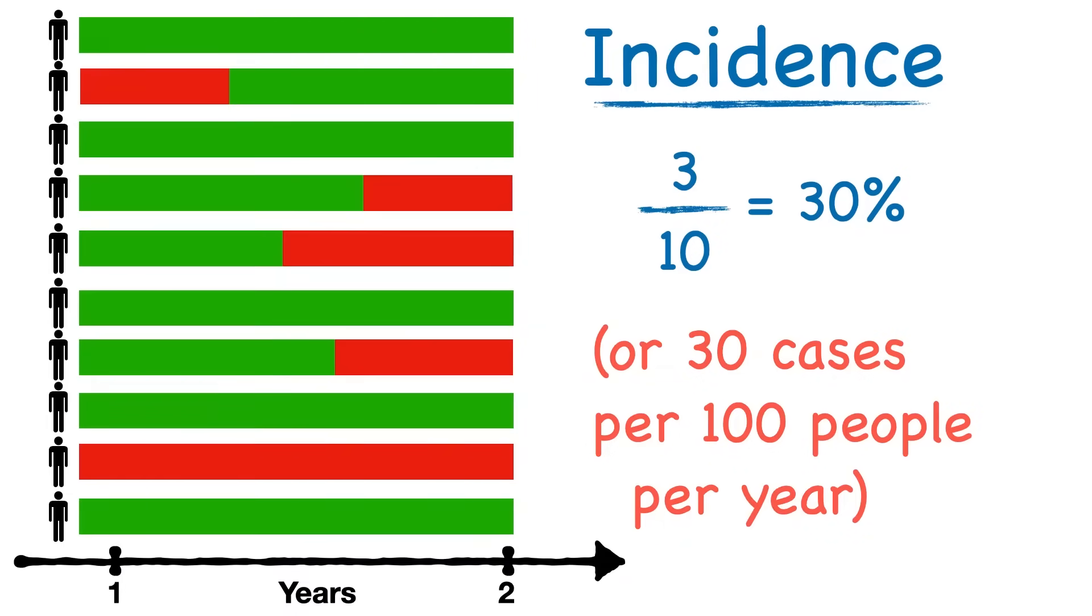In other words, of the 10 people, if there were some that came into that year period with pre-existing disease—in other words, they already had cancer—they would not be included in the incidence.